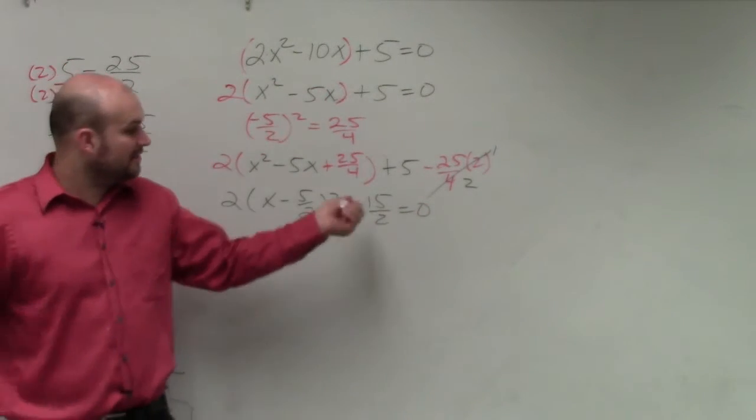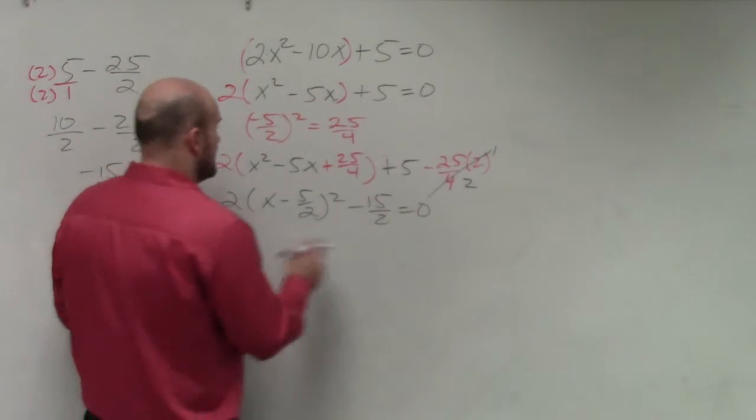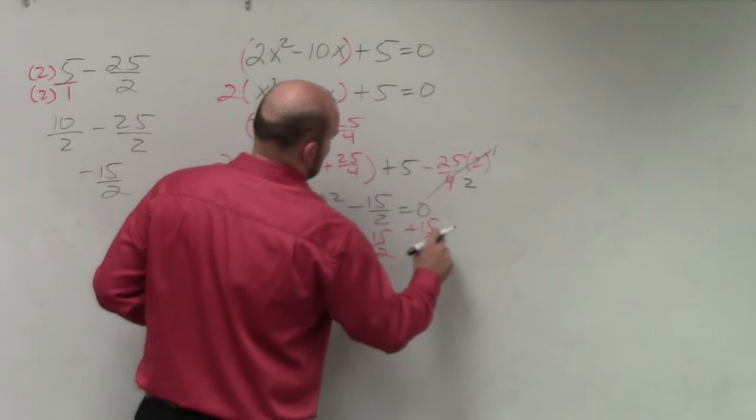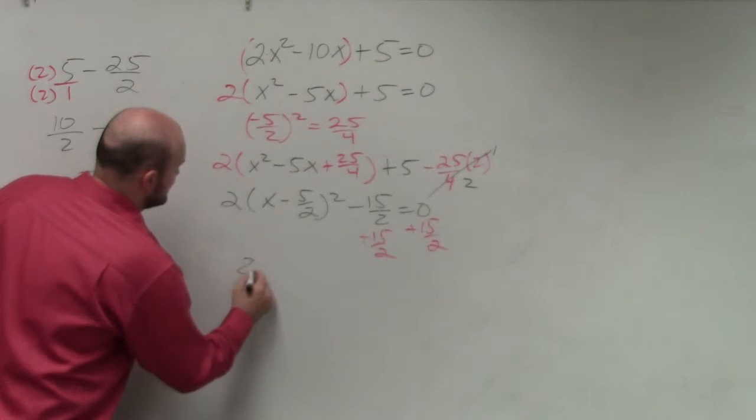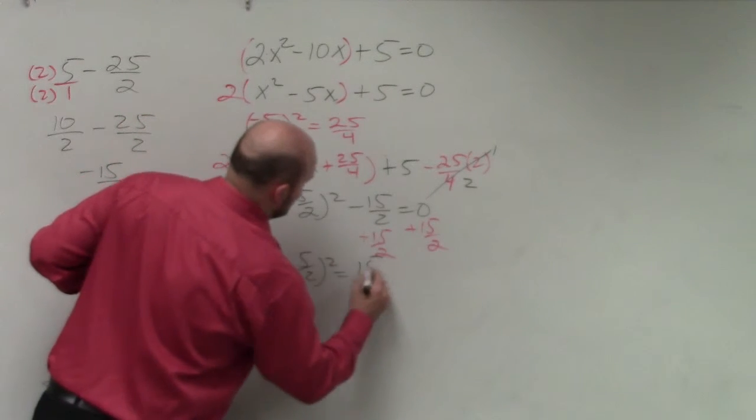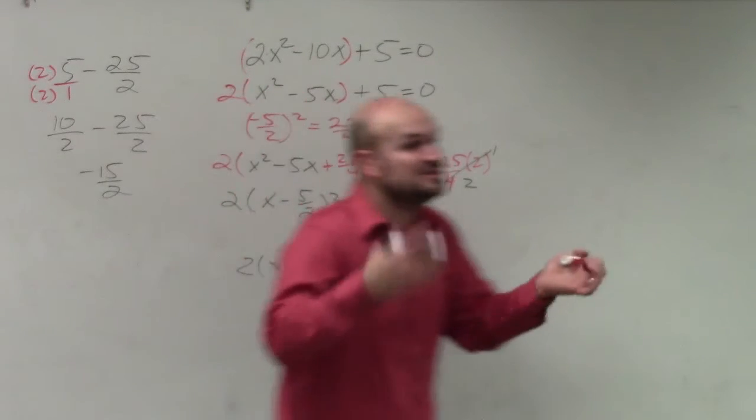Then we do the same thing. We always undo addition and subtraction first. So I add 15 halves. It's a fraction, but that's OK.